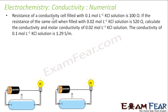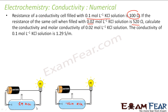The question says: the resistance of a conductivity cell filled with 0.1 mol/L KCl is 100 ohms. If the resistance of the same cell filled with 0.02 M KCl is 520 ohms. So 0.1 M KCl gives 100 ohms and 0.02 M KCl gives 520 ohms.